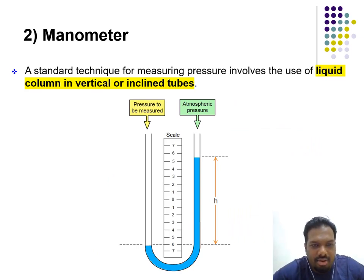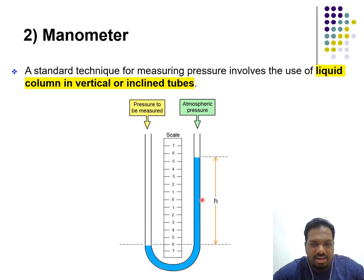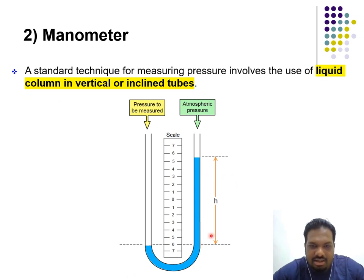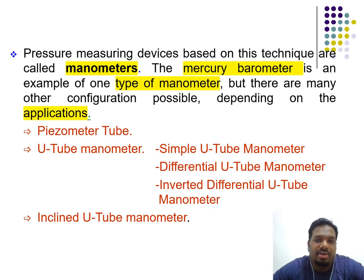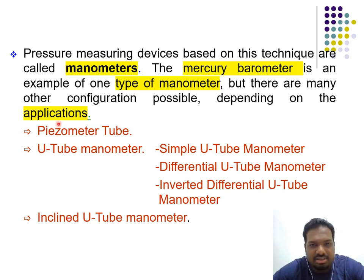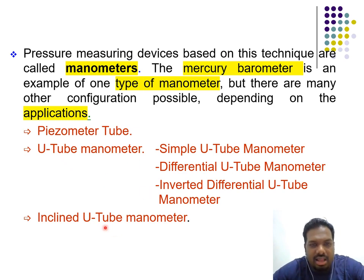Another device we use is called a manometer. When you apply a pressure, you can see the movement of fluid inside the manometer. The technique for measuring pressure involves a liquid column in a vertical or inclined tube. Pressure measuring devices based on this technique are called manometers. A mercury barometer is an example of one type of manometer, but many other configurations are possible depending on the application.